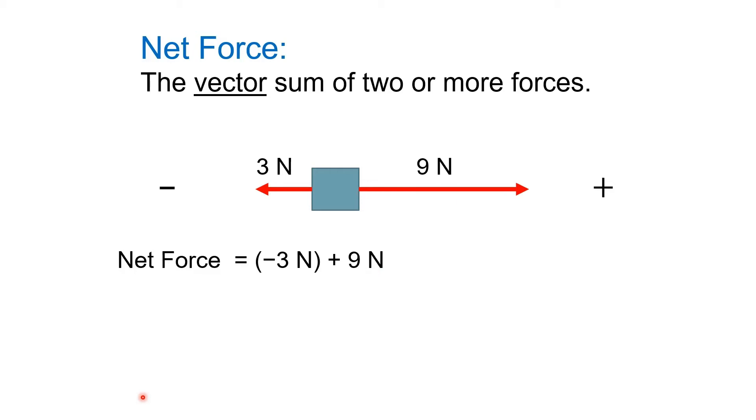So if we do that math now, it becomes easy. You just get positive six newtons. And again, the positive is actually important. It implies the positive direction. So the other way we would write that is six newtons to the right.